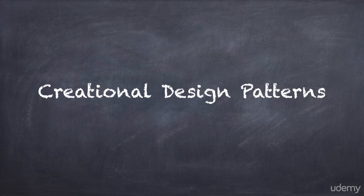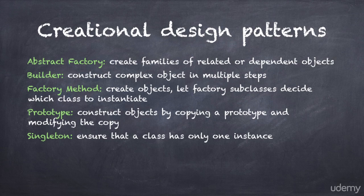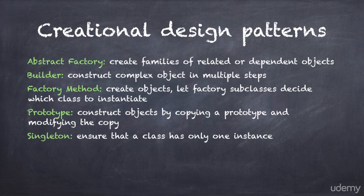We looked at all five Creational Design Patterns from the Gang of Four and identified the intent of each pattern. The abstract factory pattern creates families of related or dependent objects. The builder pattern constructs a family of complex objects in multiple steps. The factory method pattern creates objects and lets factory subclasses decide which class to instantiate. The prototype pattern constructs objects by copying a prototype and modifying the copy. And the singleton pattern ensures that a class has only one instance.